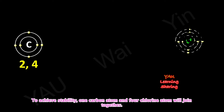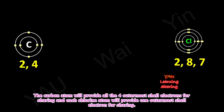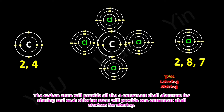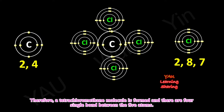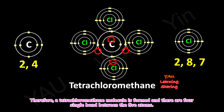To achieve stability, one carbon atom and four chlorine atoms will join together. The carbon atom will provide all four outermost shell electrons for sharing, and each chlorine atom will provide one outermost shell electron for sharing. Therefore, a tetrachloromethane molecule is formed, and there are four single bonds between the five atoms.